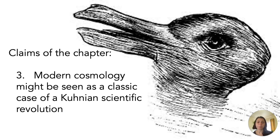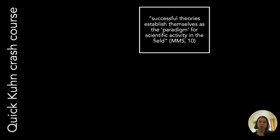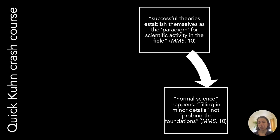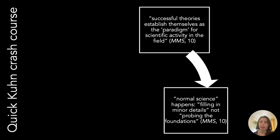Let me give you a crash course on what a Kuhnian revolution is. First, you start off with some successful theory that gets established as the paradigm for a scientific field, and everybody in that field buys into this paradigm. To make progress, what's called normal science takes place — the process of filling in minor details of that paradigm. We need small bits of information to fill in the full picture of how the theory works. Normal science does not probe the foundations of a theory; it's not asking foundational questions about the heart of the theory.